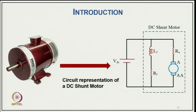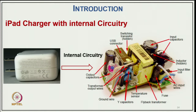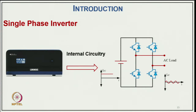A DC motor powered by a DC source has a couple of electrical circuits — a field winding connected in series with the source, and an armature winding consisting of resistance, inductance, and the armature of the DC motor. An iPad charger with internal circuitry is powered by AC supply through switch mode power converters, which include a flyback transformer and filter capacitors. A single-phase inverter, used in homes and UPS, is powered by DC and uses switching devices like IGBTs and anti-parallel diodes to produce AC output.